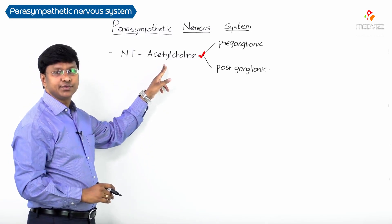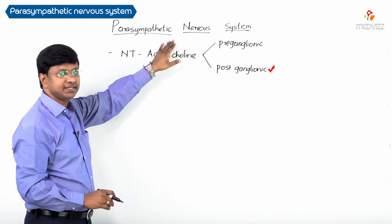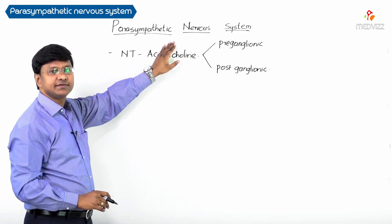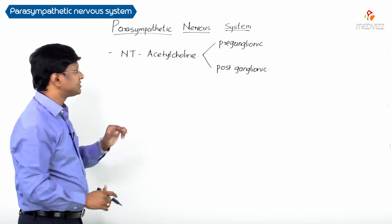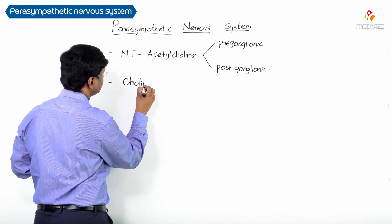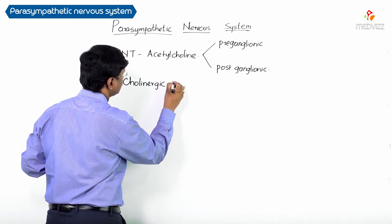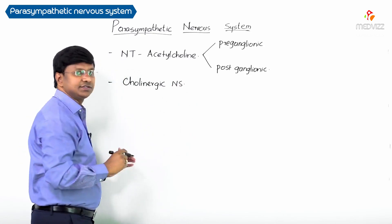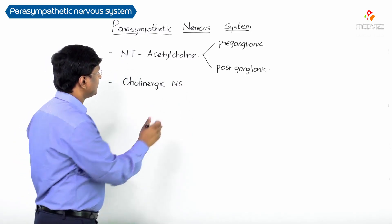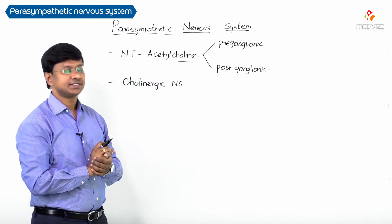Because acetylcholine is the neurotransmitter in both preganglionic and postganglionic fibers, the parasympathetic nervous system is also known as the cholinergic nervous system.